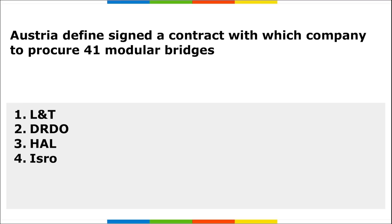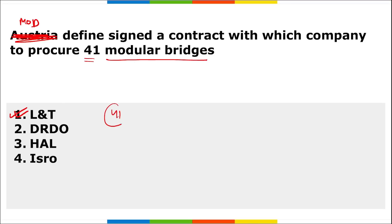First question: recently, the Ministry of Defense signed a contract with which company to procure 41 modular bridges? MOD, that is the Ministry of Defense, has signed a deal with L&T, that is Larsen and Toubro, to procure 41 modular bridges.